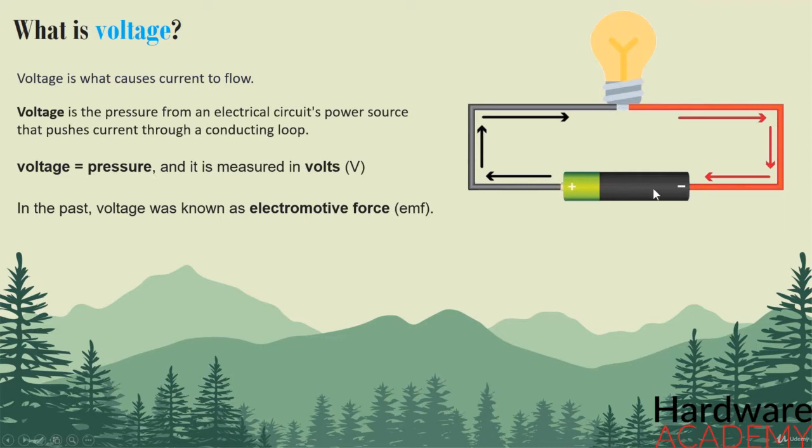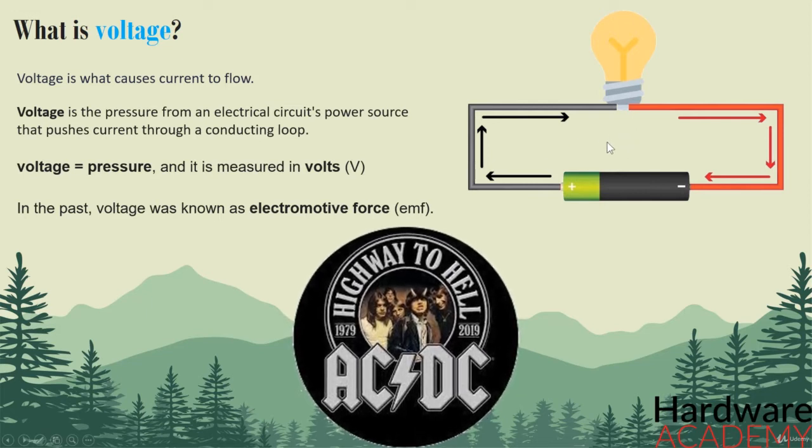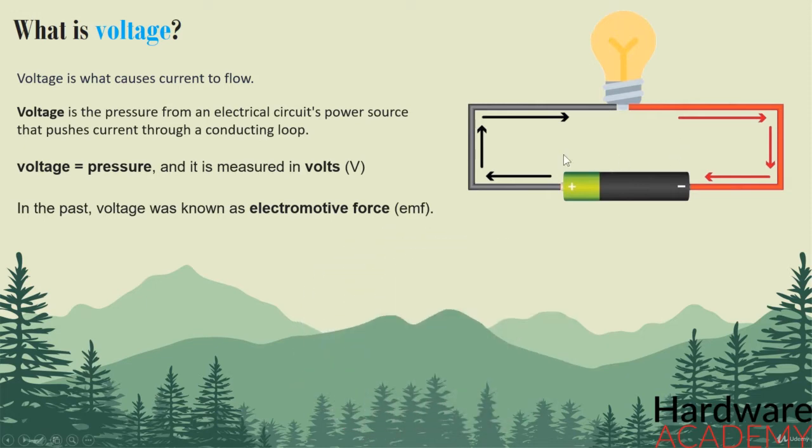When I said in this DC circuit, did you understand what I meant? Well, voltage is either alternating current, shortly AC, or direct current, shortly DC voltage. Where did the Australian rock band AC-DC get their name from? From alternating current and direct current, of course. Both AC and DC describe types of current flow in a circuit.